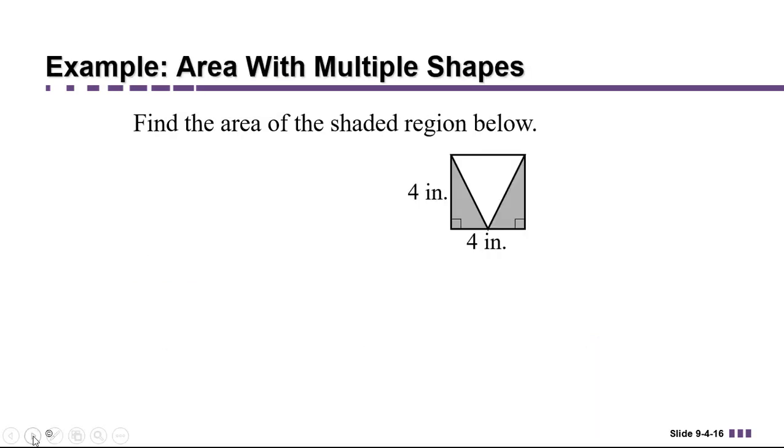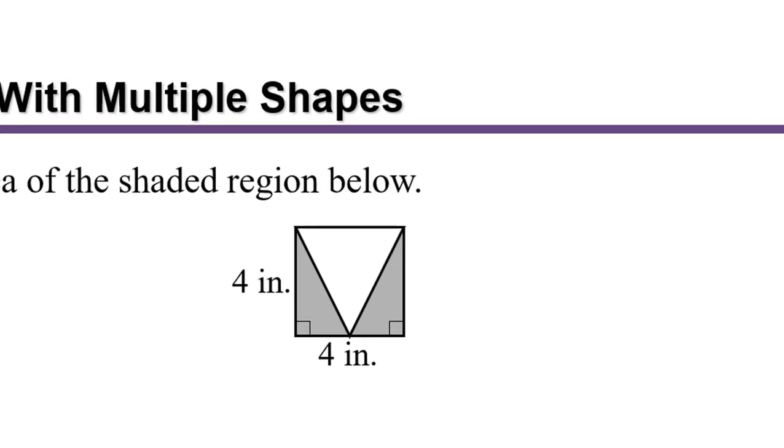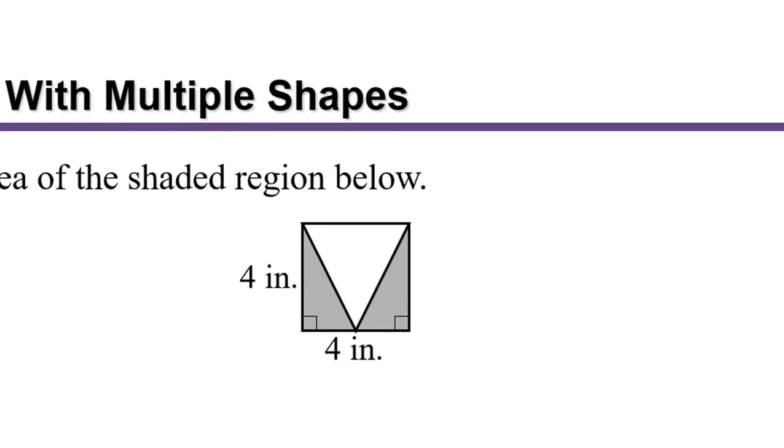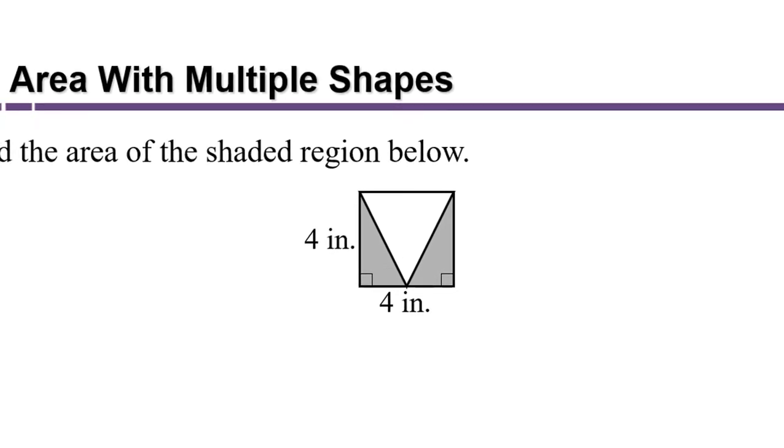Now we're going to find the area of this shaded region. Now when you look at this diagram, don't make the mistake of thinking that the base of each of those gray triangles is 2. We don't actually know that. We weren't told that. All that we know is that the outside has a length of 4 on each side. So this is a square with 4 inches on each side. And someone has removed from that square that upside-down white triangle.